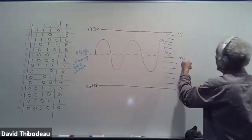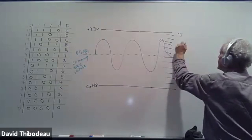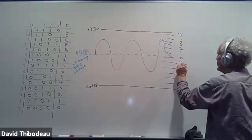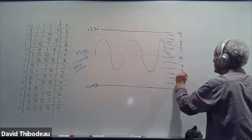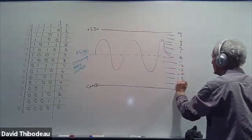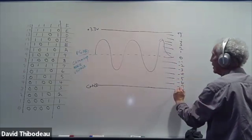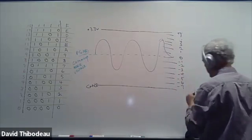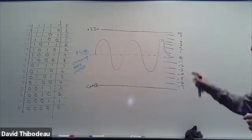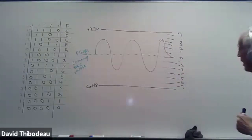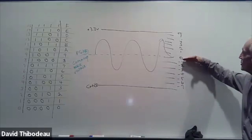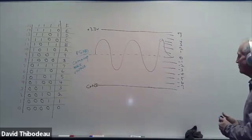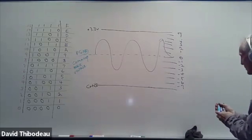For the negative numbers we use two's complement. We need minus one, minus two, minus three, minus four, minus five, minus six, minus seven, and minus eight. So we need to generate those negative representations.